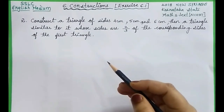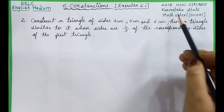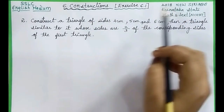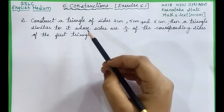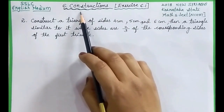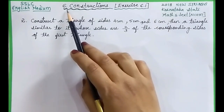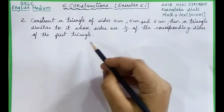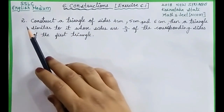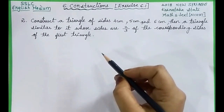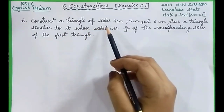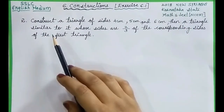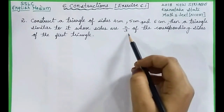Hi dear students, welcome again. We are solving problems from the Karnataka state mathematics new textbook 2018. I have chosen chapter number six, Constructions, Exercise 6.1. In our previous video we solved the first problem. Now let us solve the second problem. The question is: construct a triangle of sides 4 centimeter, 5 centimeter, and 6 centimeter, then a triangle similar to it whose sides are 2/3 of the corresponding sides of the first triangle.